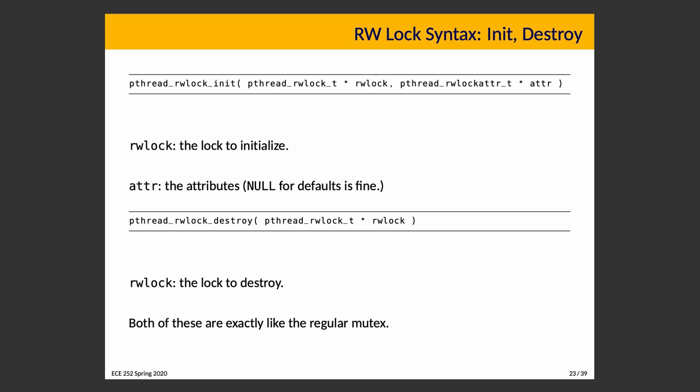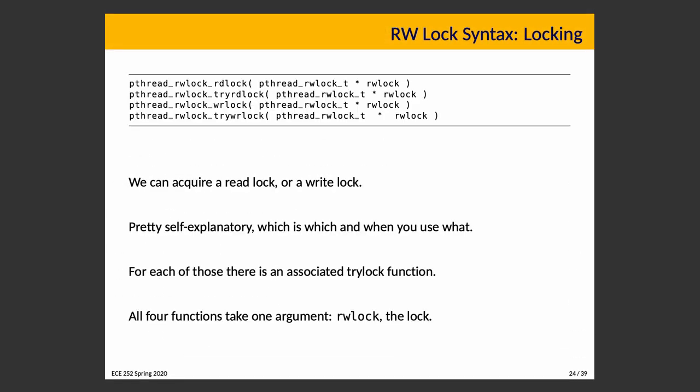To introduce the syntax for the reader-writer lock types: there are initialization and destroy functions. For a given pthread_rwlock_t type, we initialize it with the init function, which takes a pointer to the lock and a pointer to attributes — null means defaults are fine. Destroy is just like a regular mutex: pthread_rwlock_destroy takes a pointer to the thing you want to destroy. For locking, there are four lock functions: rdlock, tryrdlock, wrlock, and trywrlock.